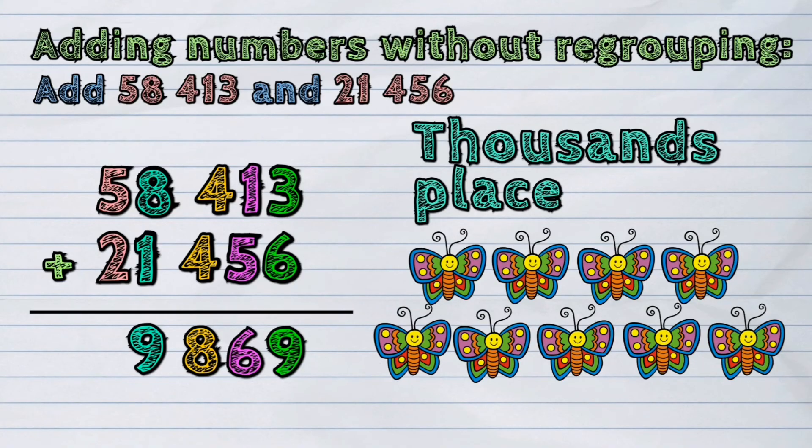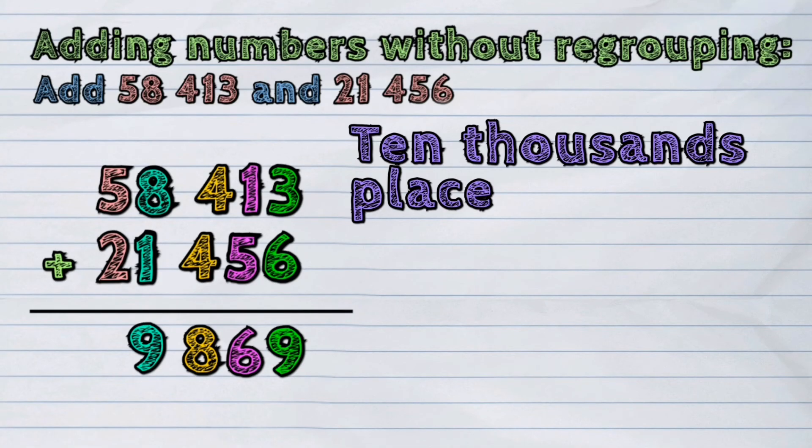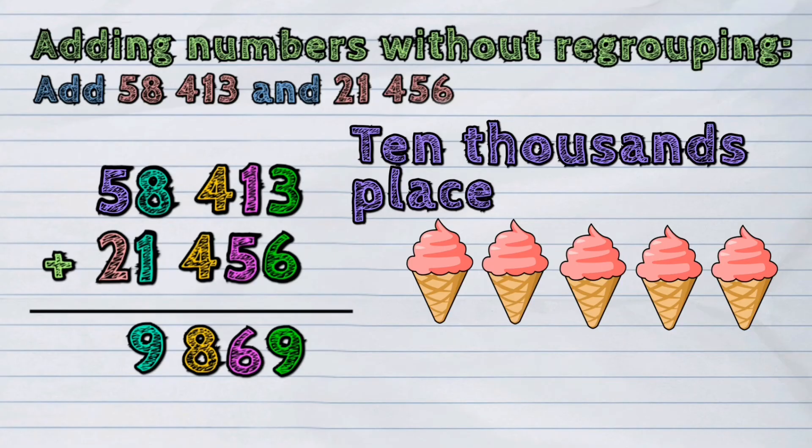And lastly, the digits from the 10,000's place. Adding 5 and 2 will give the sum of 7.